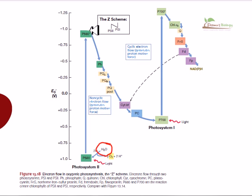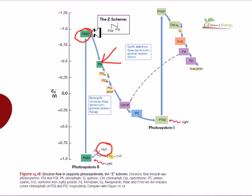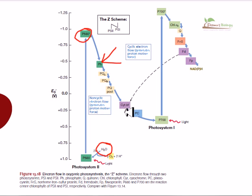When the electrons are received, the P680 complex reaches an excited state. From this excited state, the electron moves to pheophytin, which receives the electron. From pheophytin it moves to quinone A, quinone B, and finally to the quinone pool. Through the quinone pool it moves to the cytochrome bf complex, which is also embedded in the membrane. Quinone is a mobile carrier.